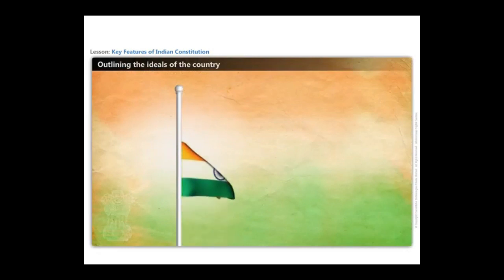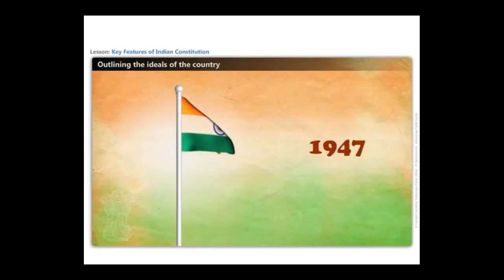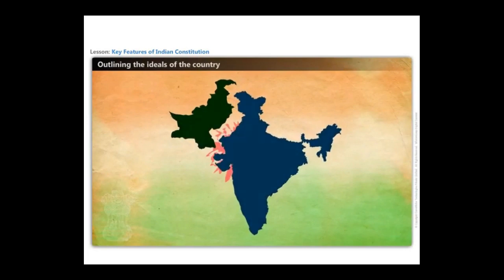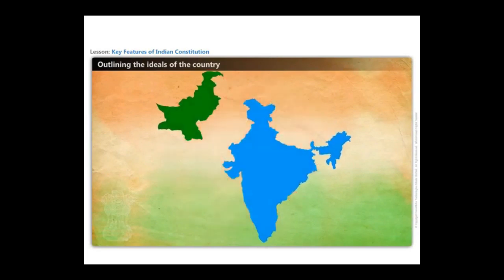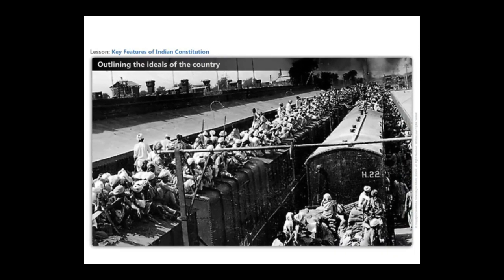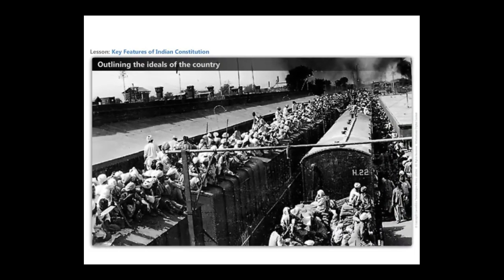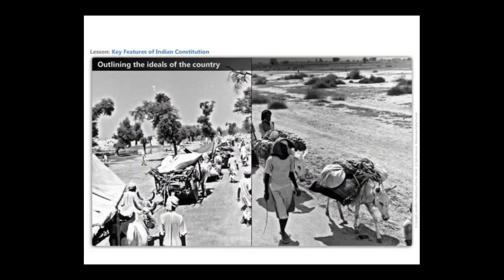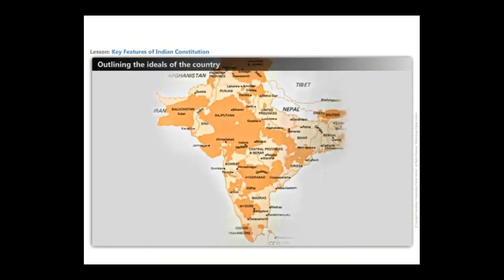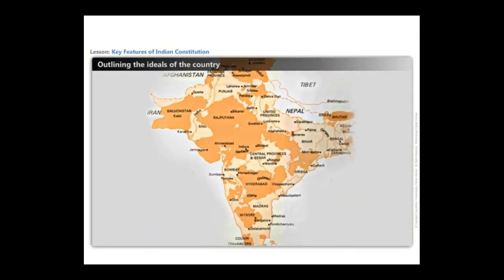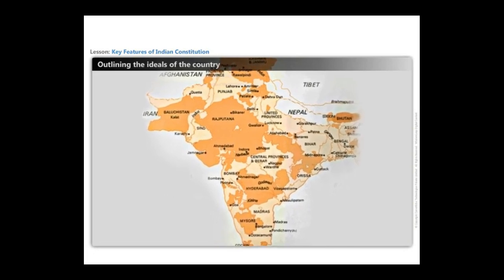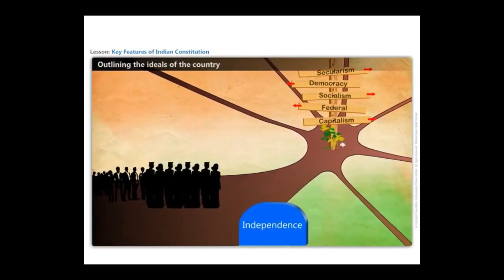After decades of agitation against the British, our country finally attained independence in 1947. The country was born through a partition on the basis of religious differences. The partition of India and Pakistan was a traumatic experience for the people of both countries, and about 10 lakh people were killed on both sides of the border in partition-related violence. There was another problem regarding the merger of the princely states, and the British had left the decision to the rulers of these states. There were also sharp differences of opinion within the freedom struggle about the path India should take after independence.